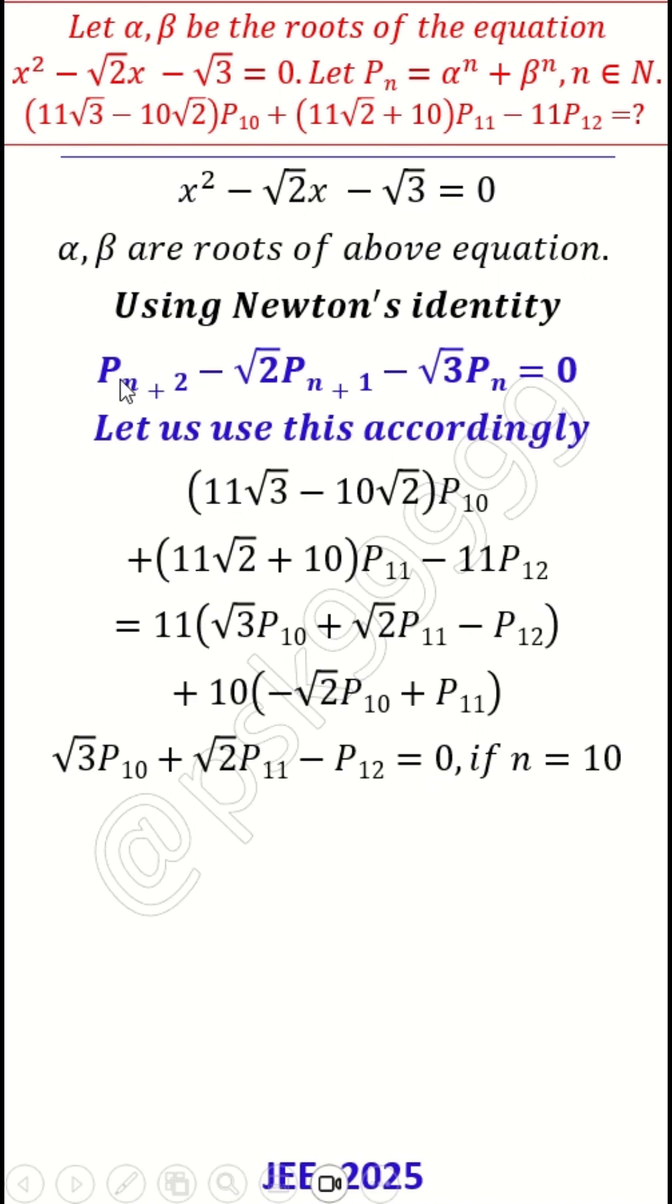Just multiply by negative on the LHS and RHS. You will get -P_12 + √2P_11 + √3P_10 = 0. This term is 0, 11 times 0. And the second term is -√2P_10 + P_11.